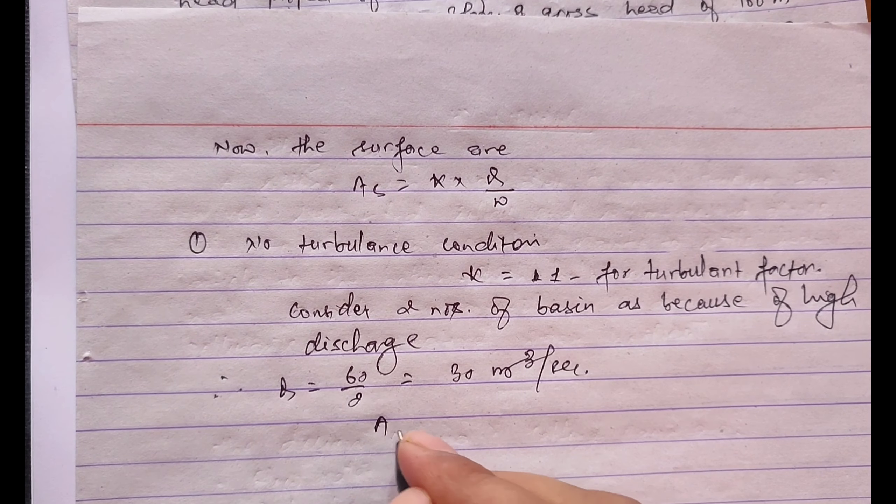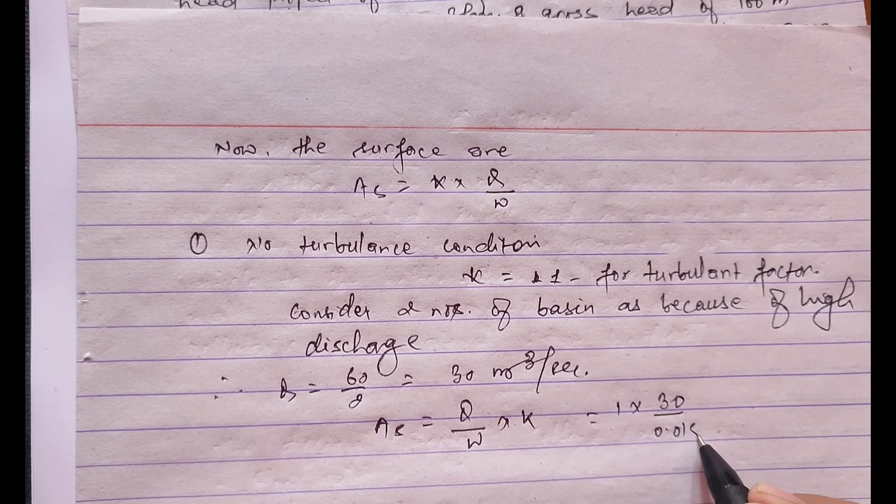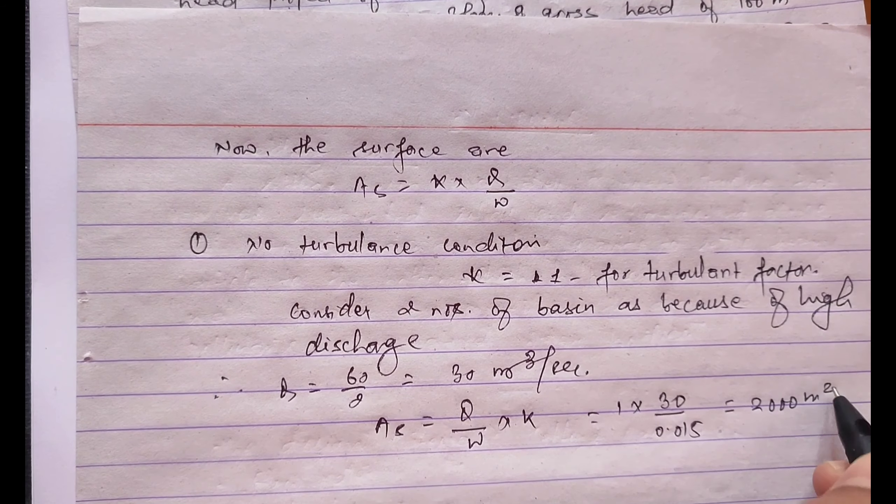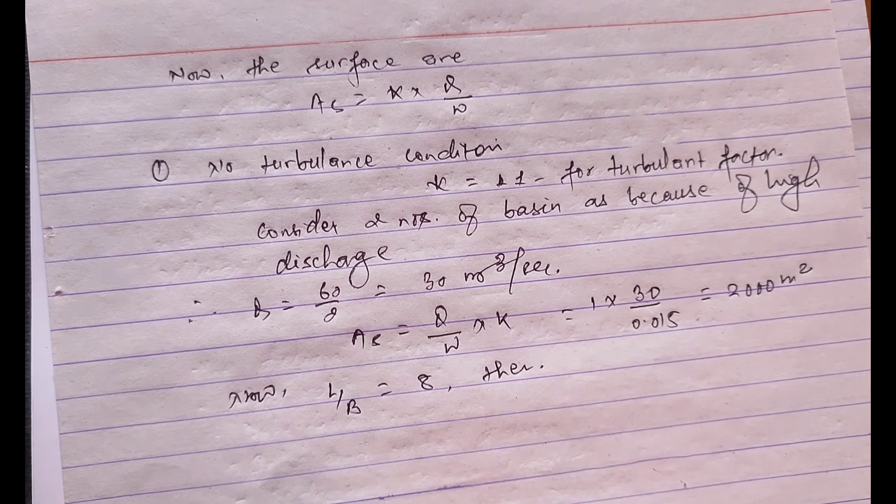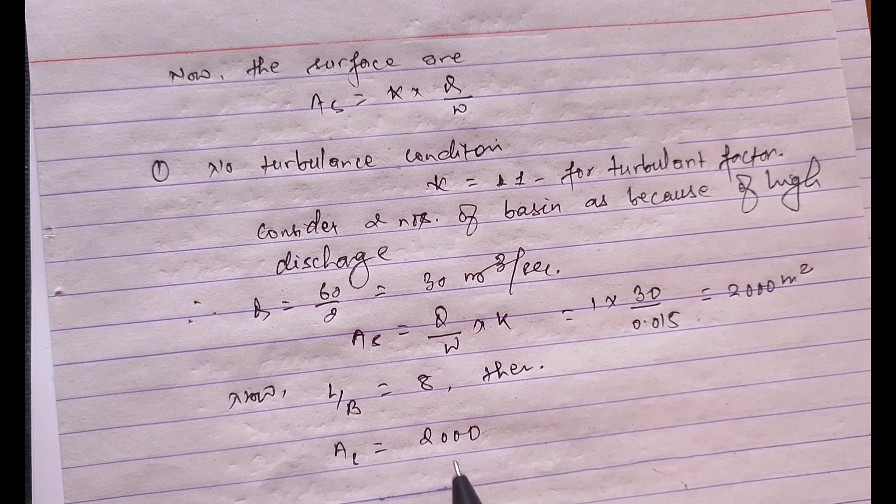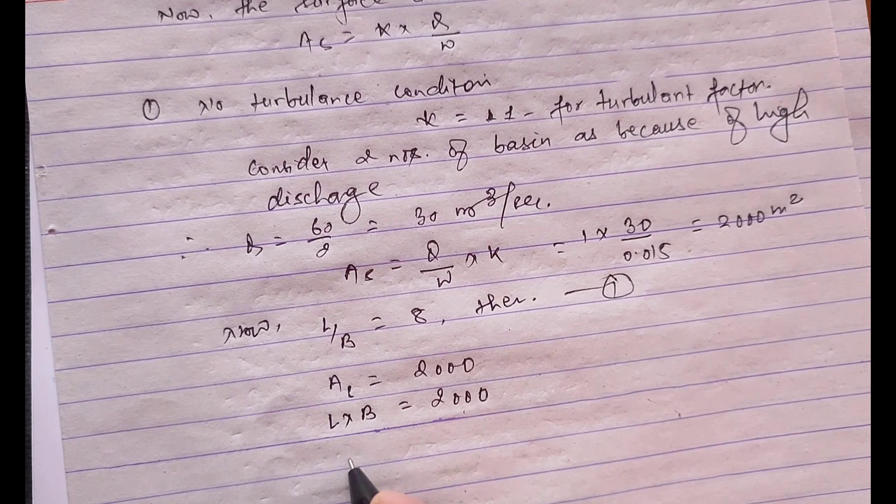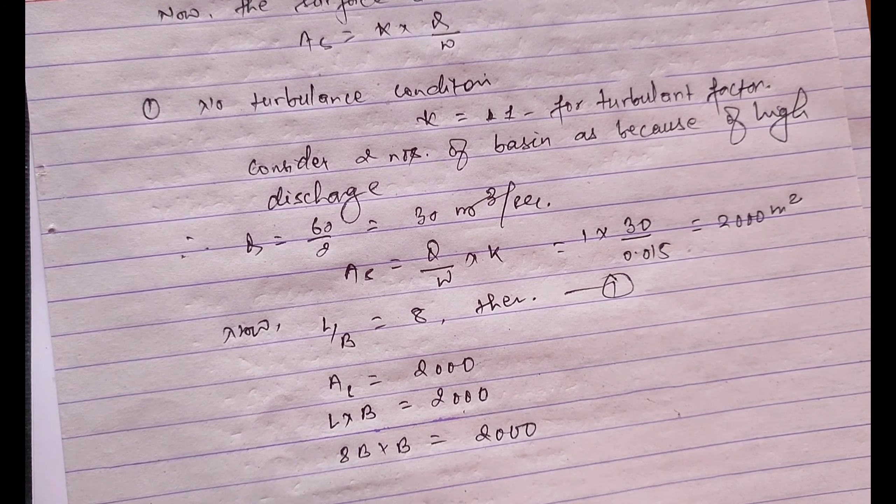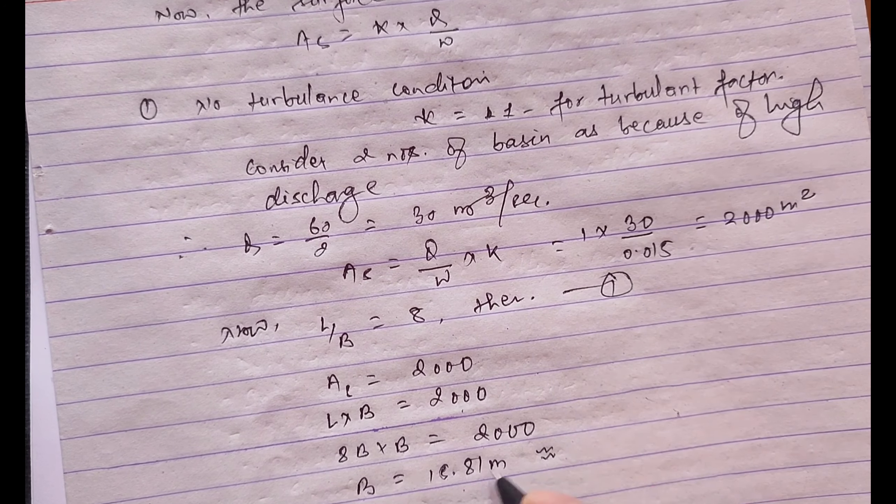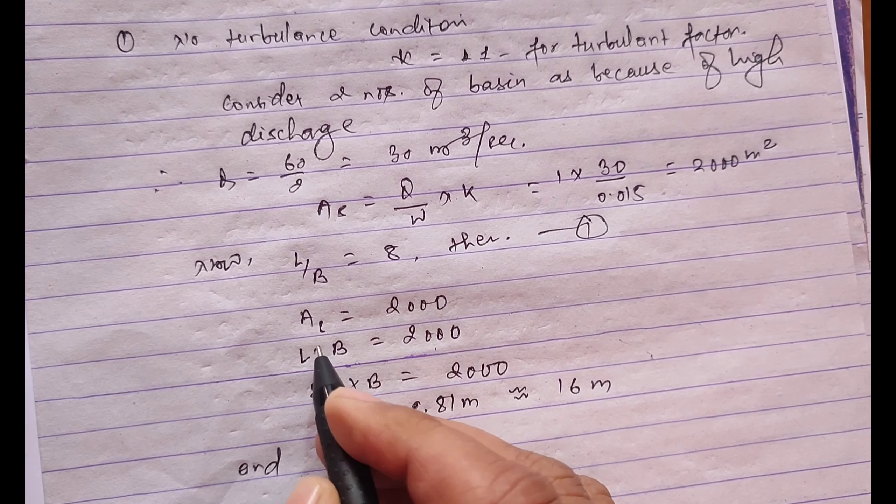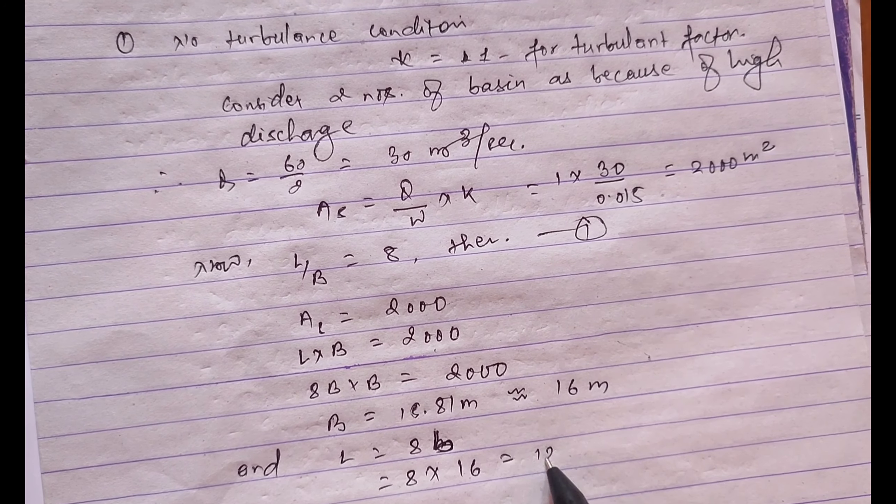Now we'll calculate surface area As equals Q divided by w times k equals 1 times 30 divided by 0.015 equals 2000 meter square. Now taking the L by B ratio of 8, then area As equals 2000. From this equation the value of l is 8b times b equals 2000, that is b equals on solving this the value of b equals 15.81 meter which is nearly equals to 16 meter, and l equals 8 times b equals 8 times 16 equals 128 meter.